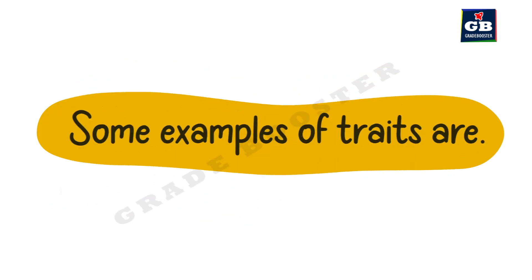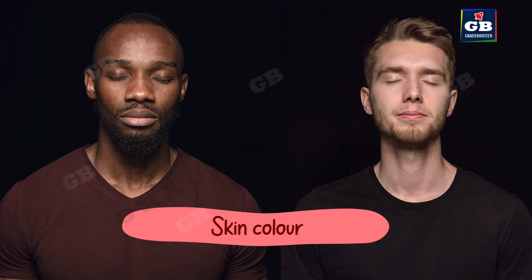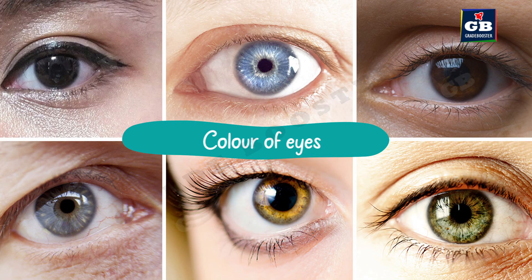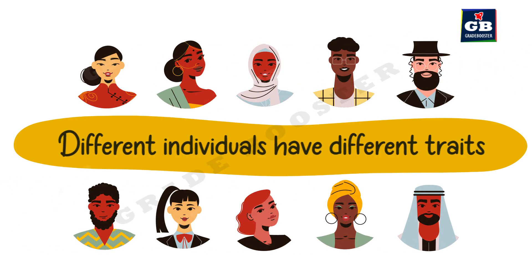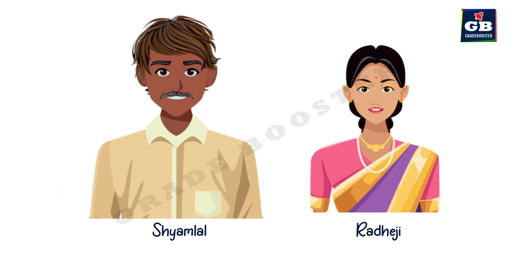What are traits? Traits are the special characteristics of an individual organism. Some examples of traits are skin color, height, eye color, and hair type. Different individuals have different traits. Traits are of two different types. Let us understand them with the help of an example.